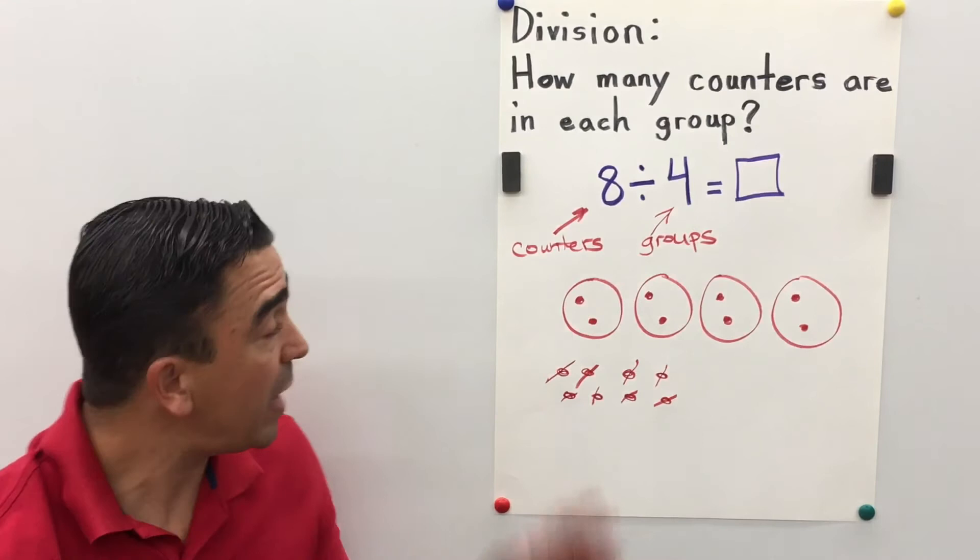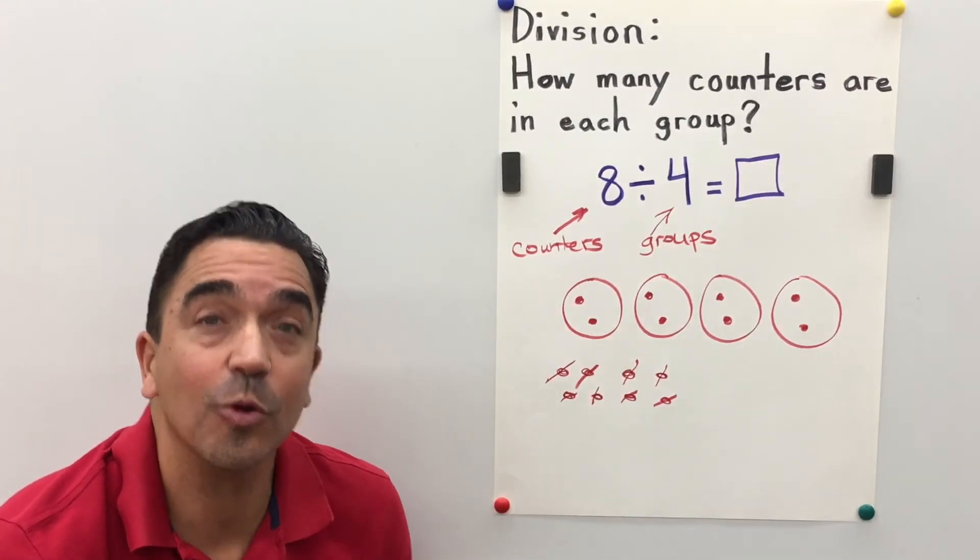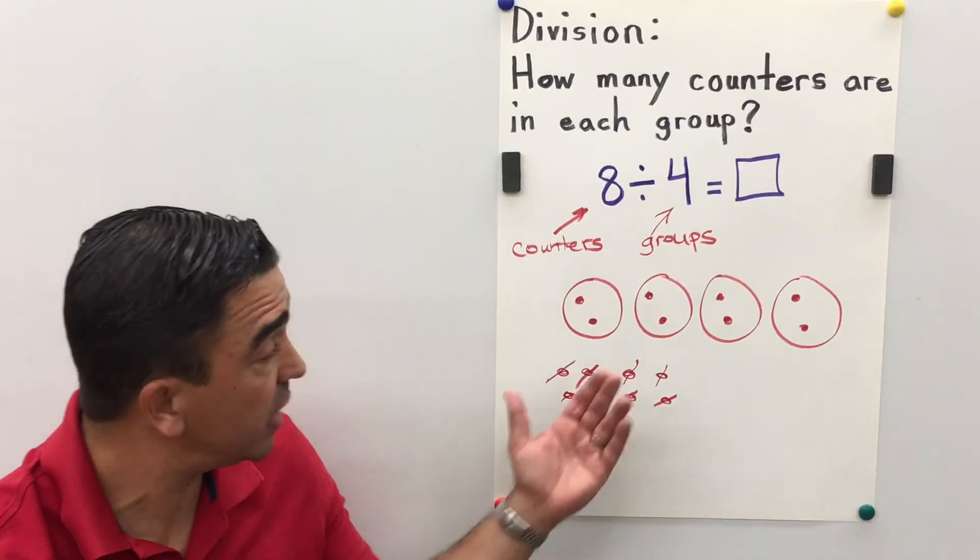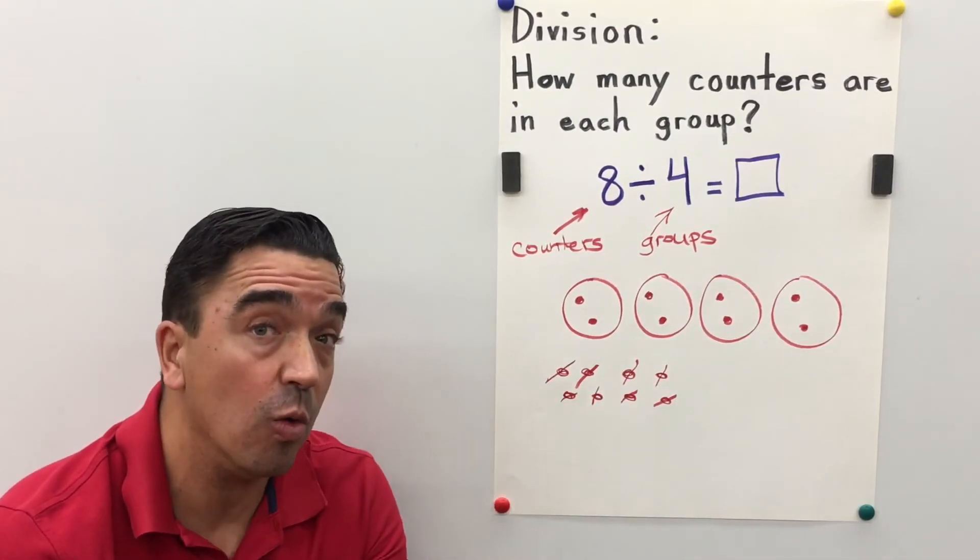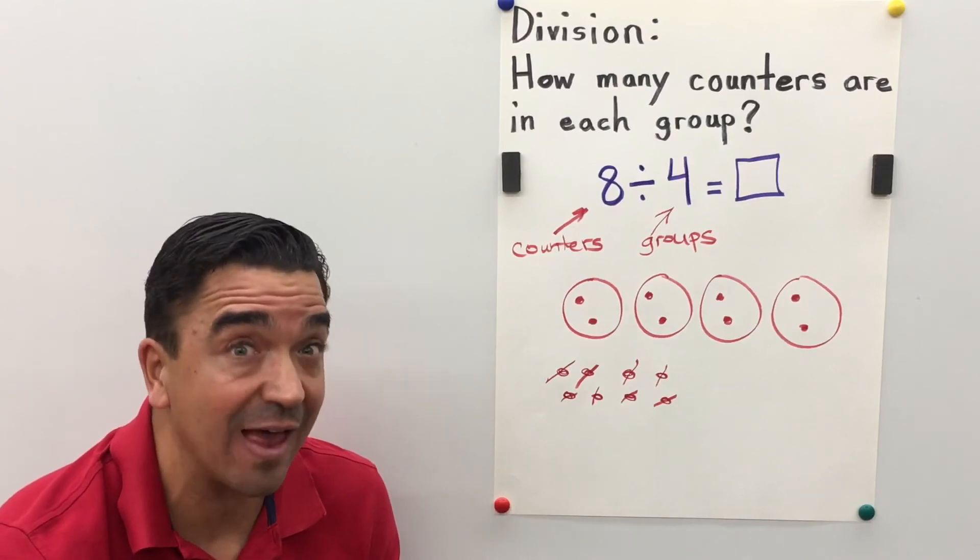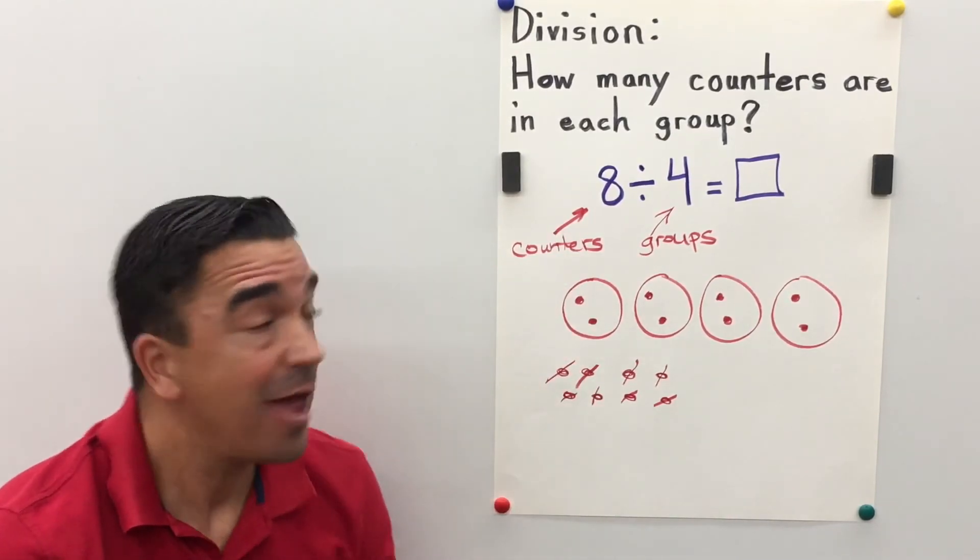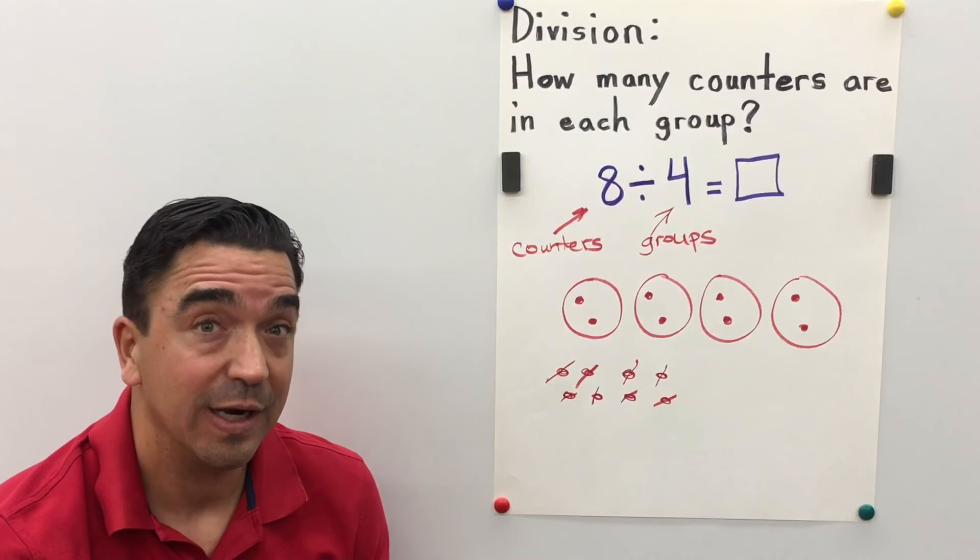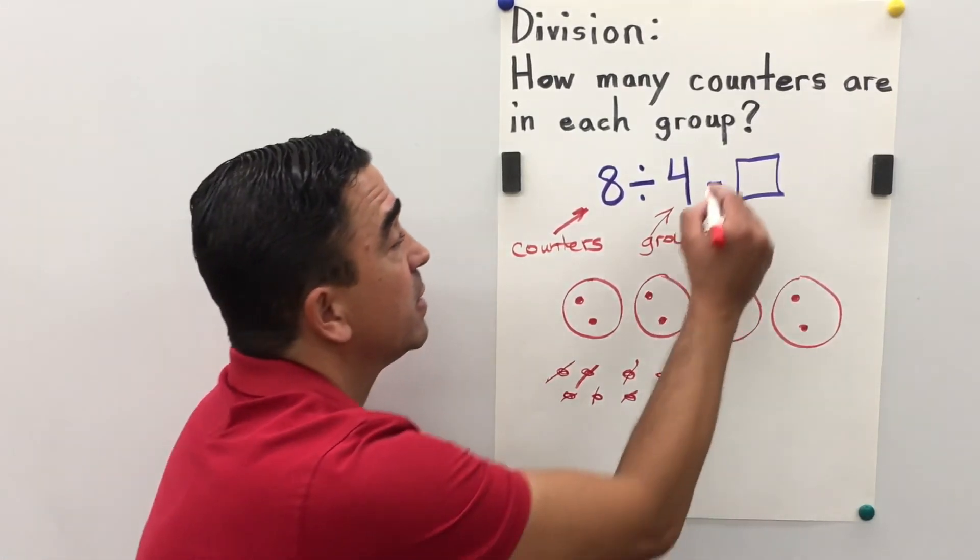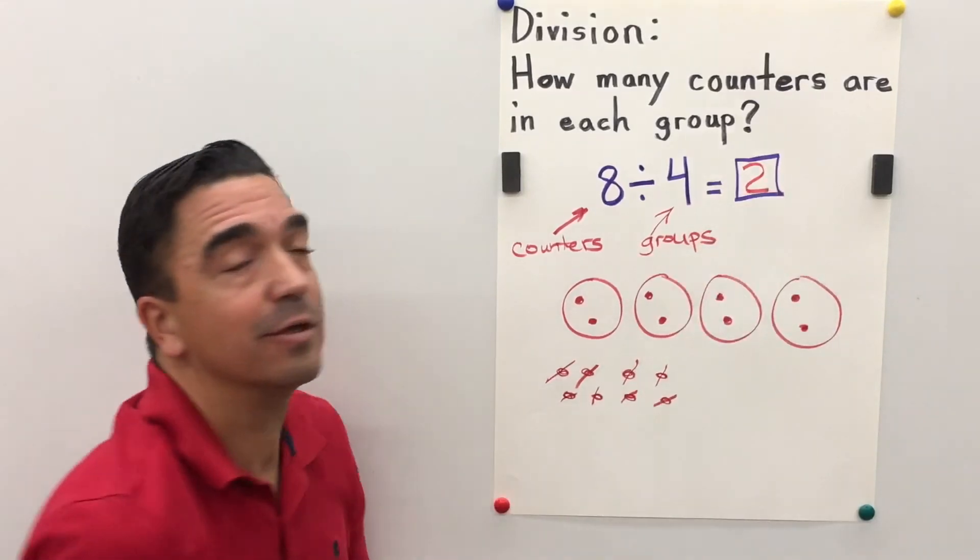Now, we have 4 equal groups, and there are 2 counters in each group. So, our division sentence says 8 divided by 4 equals, or gives us a quotient of, 2.